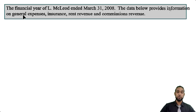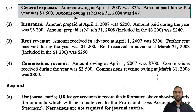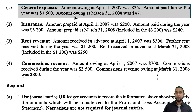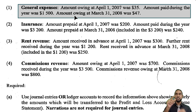In this question we actually have 40 accounts to do, so we're going to take them one at a time. The financial year of L McLeod ended March 31st 2008. The data below provides information on general expenses, insurance expense, rent revenue, and commissions revenue. What they want us to do for each account is to enter the information given and find the income statement figure — in the case of expenses, the expense incurred for the period, and in the case of revenue, the revenue earned for the period.